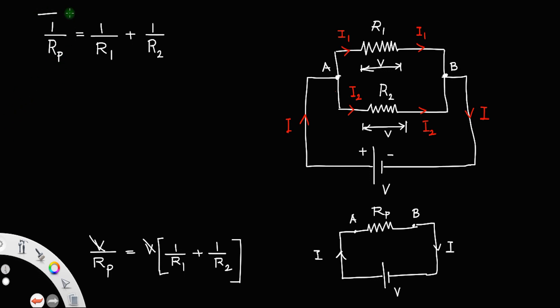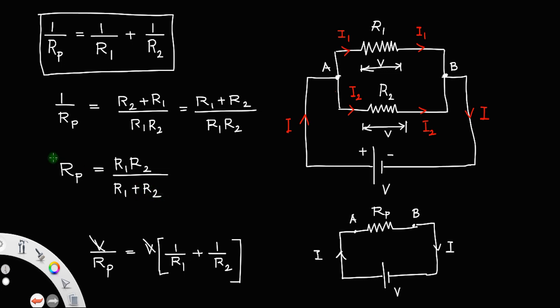Or you can write, so this is the expression. Also, you can write 1 by Rp is equal to, cross multiplying, which you will get R2 plus R1 divided by R1 R2. This is also R1 plus R2 divided by R1 R2. Taking the reciprocals on both sides, then Rp will be R1 R2 divided by R1 plus R2.